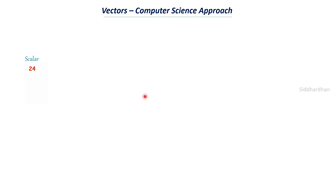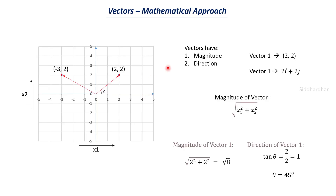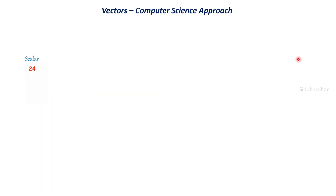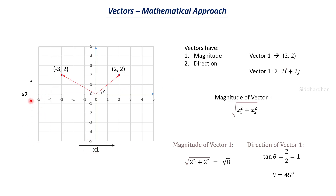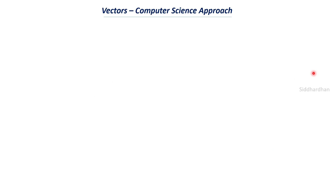In computer science, a scalar is simply a number — it can be an integer or a float. A vector is a list of numbers. Just as we saw a vector as a list of coordinates, here it is a list of numbers. Our earlier example was two-dimensional with an x1-axis and x2-axis. We can also have three dimensions, giving a vector like 2i̅ + 2j̅ + 2k̅. A vector can be a list with one row or one column, similar to arrays in Python, C, or other languages.